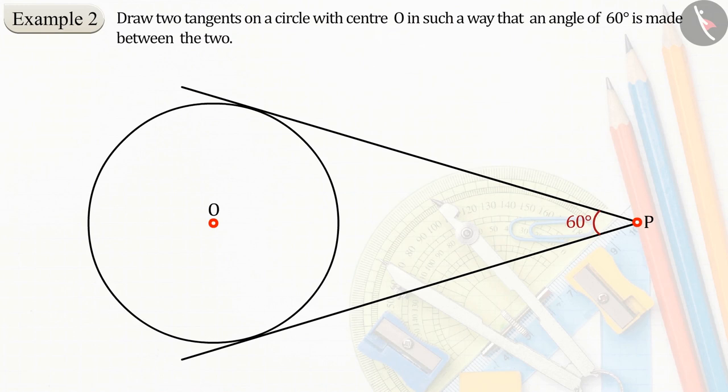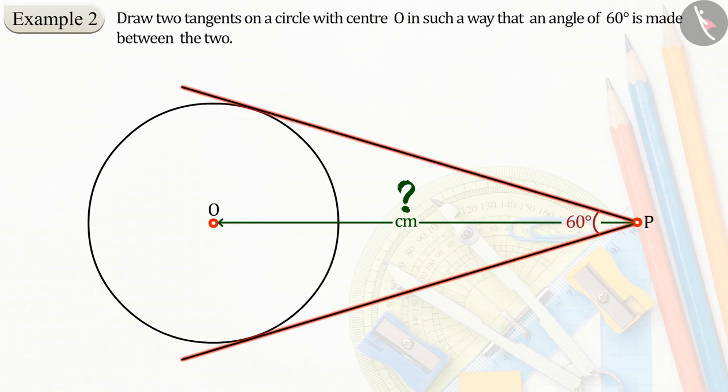Like every question, in this question also we have a circle and know about its center. But in this question, we have not been told the distance between the outer point and the center of the circle. But the angle formed between the tangent lines is described.